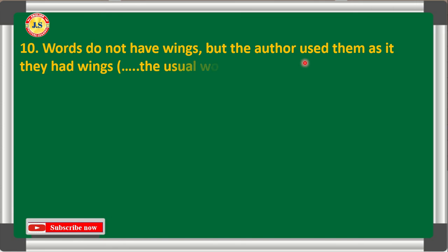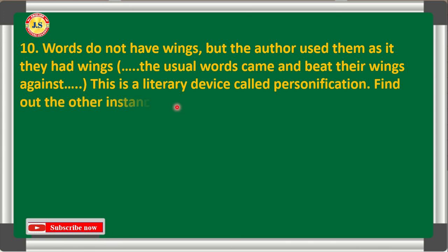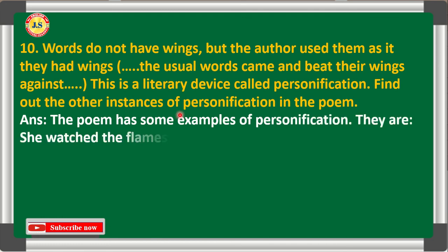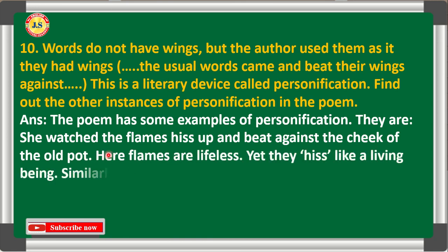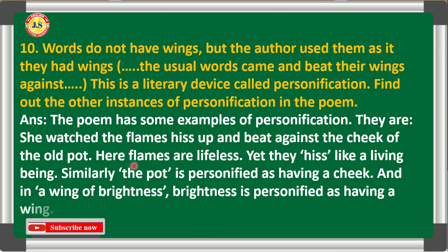Question 10: 'Words do not have wings, but the author used them as if they had wings' — this is a literary device called personification. Find other examples of personification in the poem. Answer: Examples of personification include: 'She watched the flames kiss and lick against the cheek of the old pot' — here flames are lifeless but kiss like a living being, and the pot is personified as having a cheek. Also, 'a wing of brightness' — brightness is personified as having a wing.